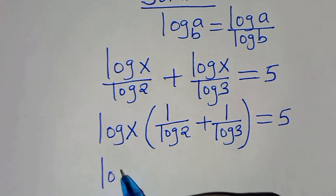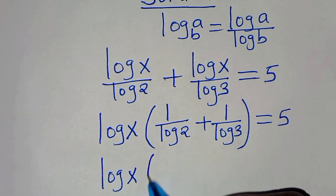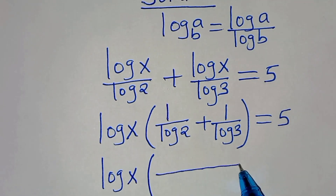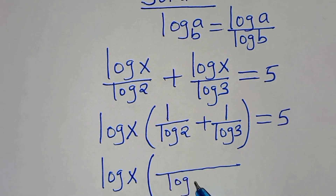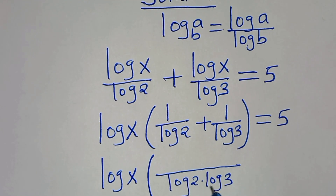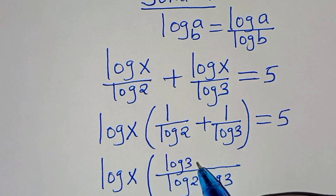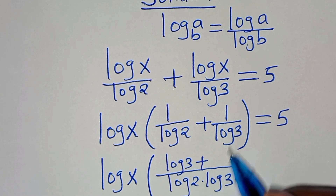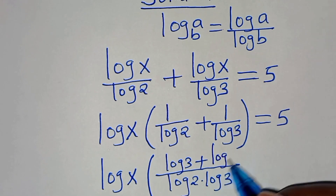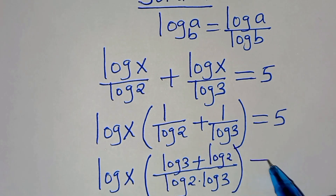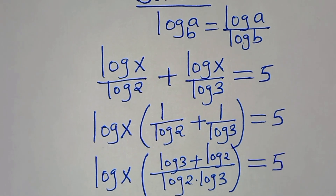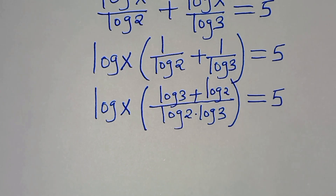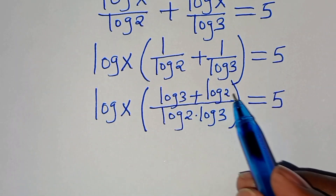Factoring out log x, we get log x times the quantity (1 over log 2 plus 1 over log 3) equals 5. Finding the LCM inside the parentheses: the LCM is log 2 times log 3. So we get log 3 over (log 2 · log 3) plus log 2 over (log 2 · log 3), which gives log x times (log 3 plus log 2) over (log 2 · log 3) equals 5.